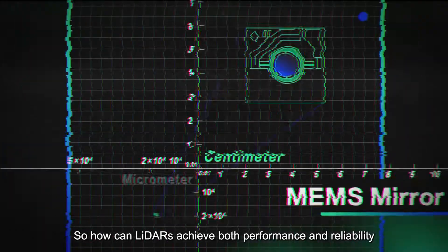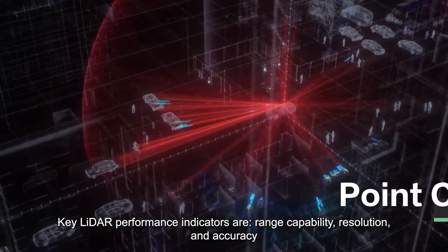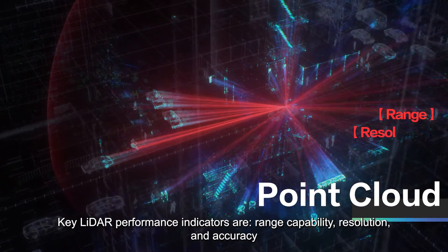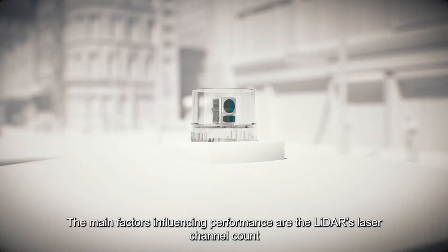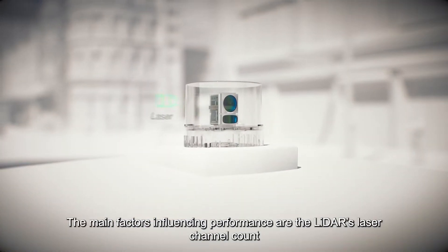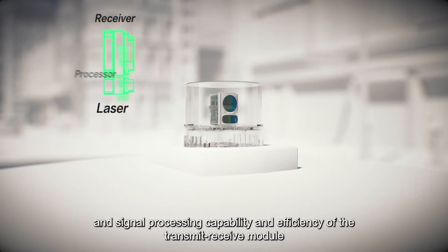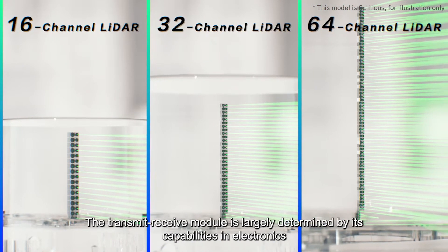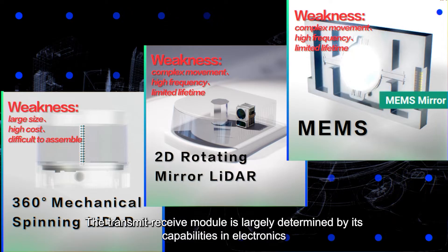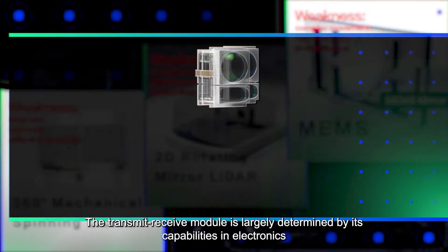So how can LiDARs achieve both performance and reliability? Key LiDAR performance indicators are range capability, resolution, and accuracy. The main factors influencing performance are the LiDAR's laser channel count and signal processing capability and efficiency of the transmit-receive module. The transmit-receive module is largely determined by its capabilities and electronics.